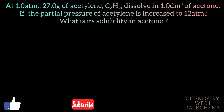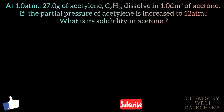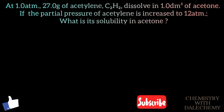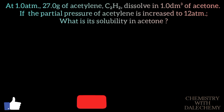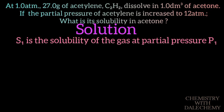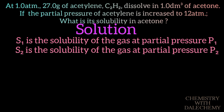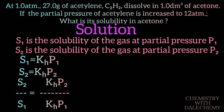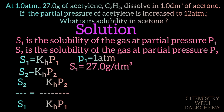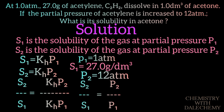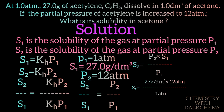The first question: at one atmospheric pressure, 27.0 grams of acetylene (C2H2) dissolve in 1 dm³ of acetone. If the partial pressure of acetylene is increased to 12 atm, what is its solubility in acetone? Let S1 be the solubility at partial pressure P1, and S2 be the solubility at partial pressure P2. Using Henry's law: S1 = K×P1 and S2 = K×P2. Therefore, S2/S1 = P2/P1, where P1 = 1 atm, S1 = 27.0 g/dm³, and P2 = 12 atm. S2 = (27 g/dm³ × 12 atm) / 1 atm = 3.2 × 10² g/dm³.